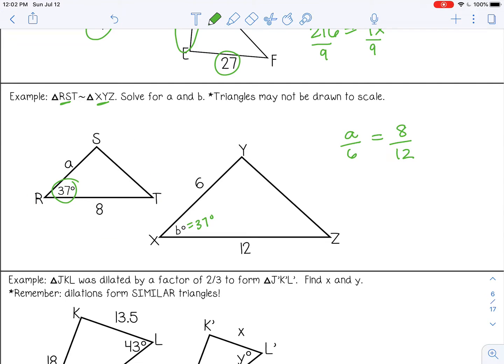I want to cross multiply. So 12 times A is 12A, 6 times 8 is 48, and then divide both sides by 12. So A equals 4.